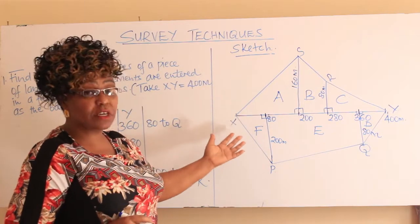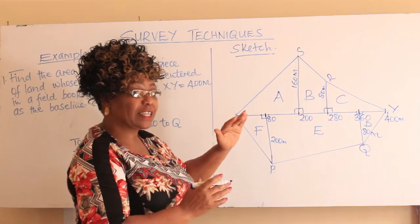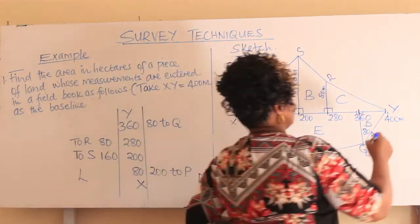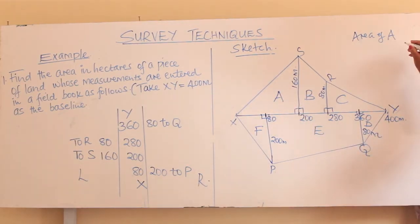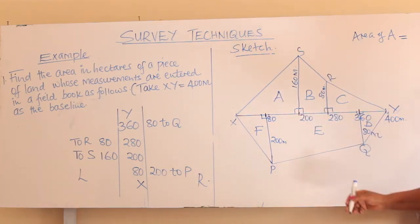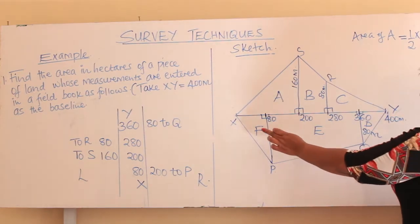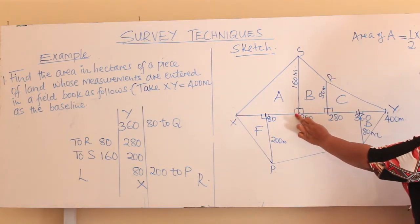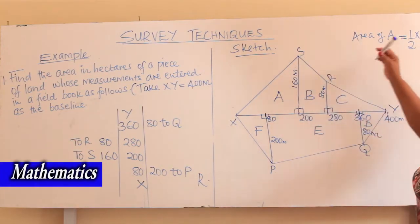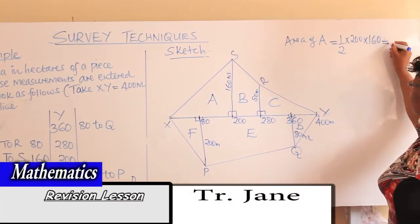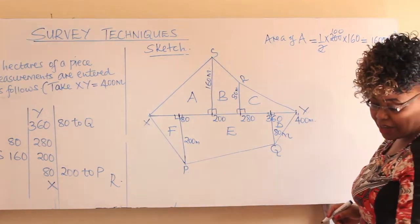How do you find the area of this piece of land? You first find the area of all these plane figures. What is the area of A? This figure is a triangle, and therefore the area is a half times base times height. Our base is 200 and our height is 160 meters. You work that out using a calculator, and therefore you get 16,000 meters squared.